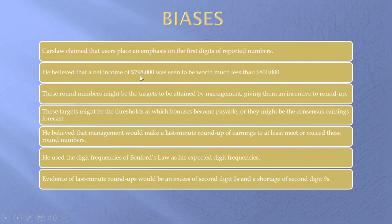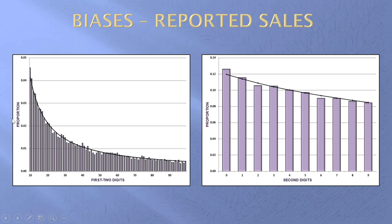What happens when we move from just below a threshold to just above is we change the second digit from a nine to a zero. And if enough people do that, we're going to have more second-digit zeros than expected and fewer second-digit nines. Looking at real data from 2018 — quarterly reported numbers for calendar 2018, so for most companies the first, second, third, and fourth quarter — I looked at the reported sales numbers. The data came from Compustat, a beautifully conforming first two-digit graph. But when I look at the second digits alone, I do have extra zeros, but not fewer nines.